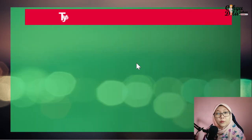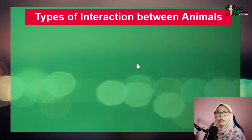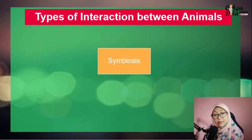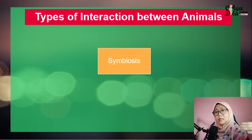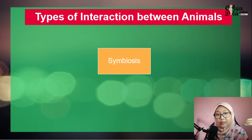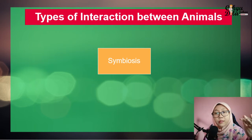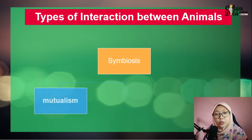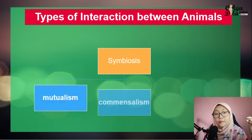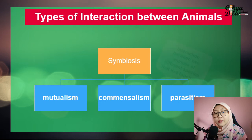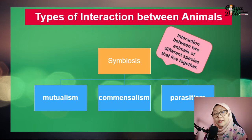The second disadvantage is it's hard for them to find breeding mates during mating season. Next, we move to the types of interactions between animals: symbiosis. Symbiosis is the interaction between animals of different species that live together, and it can be divided into three types: mutualism, commensalism, and parasitism.